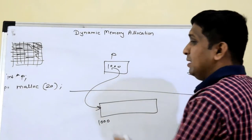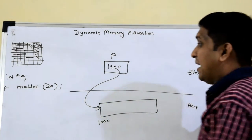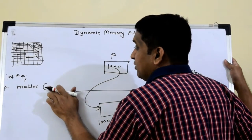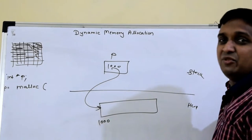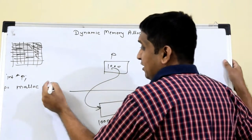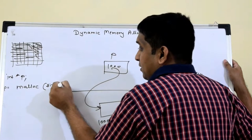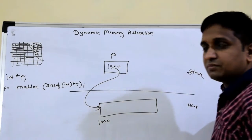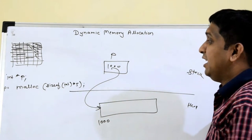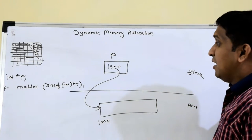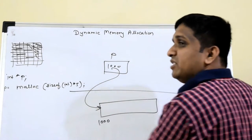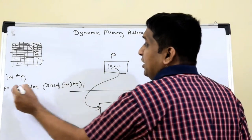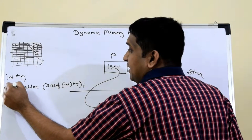malloc(20) will allocate memory to store 5 integers, but instead of hardcoding 20 the general syntax is: sizeof(int) * 5 - that is, sizeof one element multiplied by number of elements. You should also note that the return type of malloc is a void pointer, so since it is a void pointer I need to typecast it to another type. Here there will be a typecast as (int *).